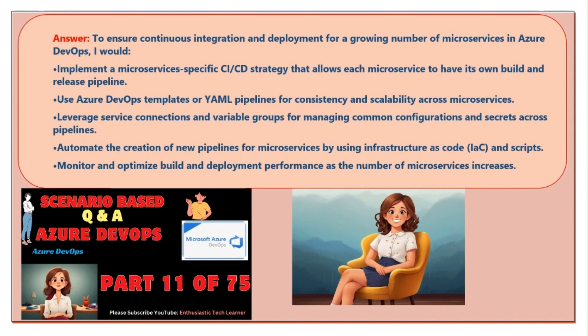Leverage service connections and variable groups for managing common configurations and secrets across pipelines. Automate the creation of new pipelines for microservices by using infrastructure as code (IaC) and scripts. Monitor and optimize build and deployment performance as the number of microservices increases.